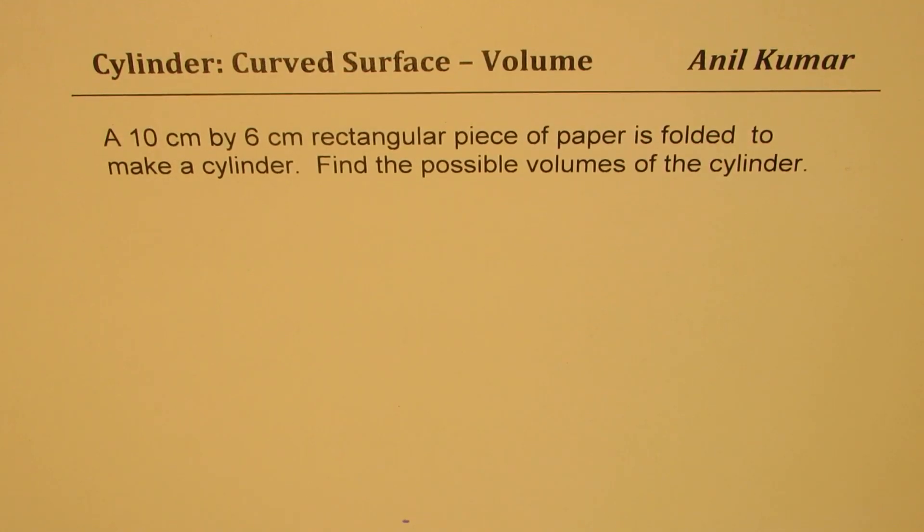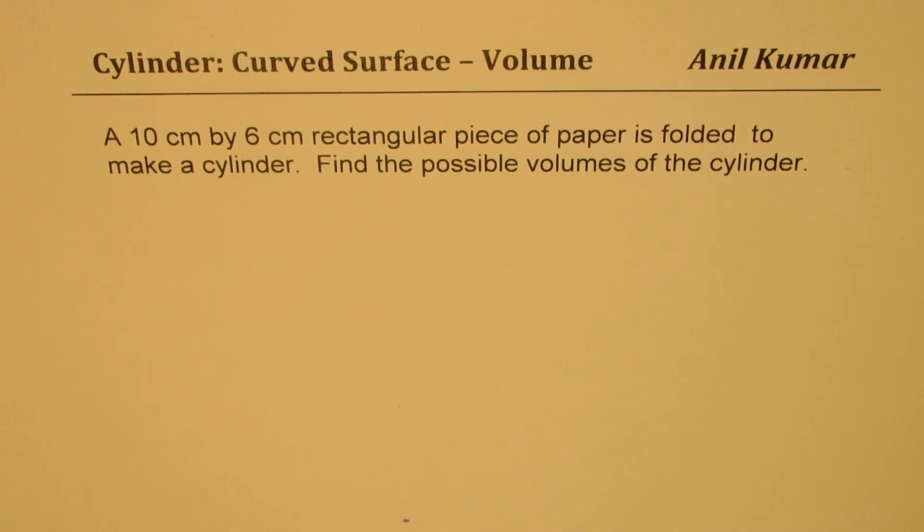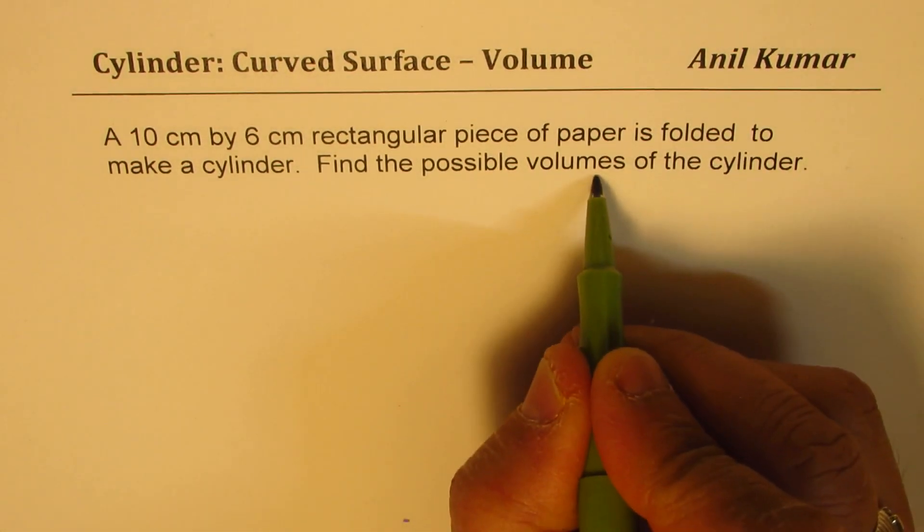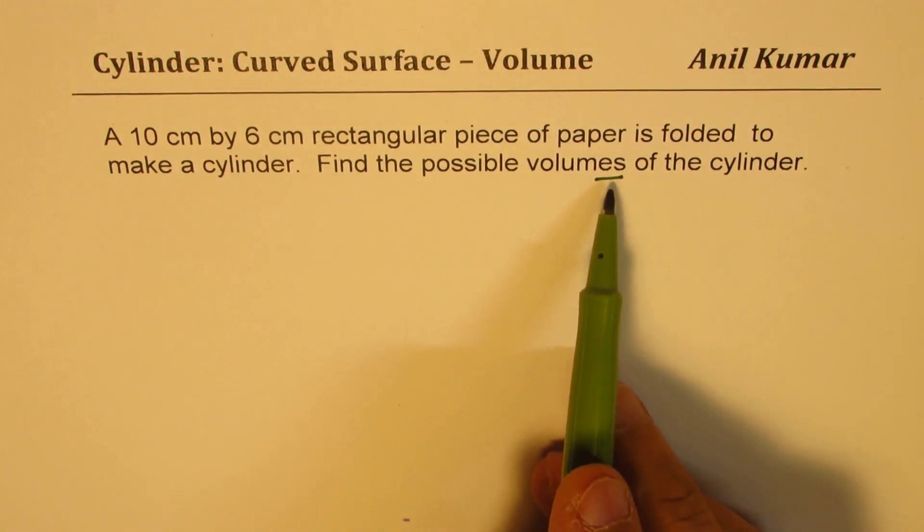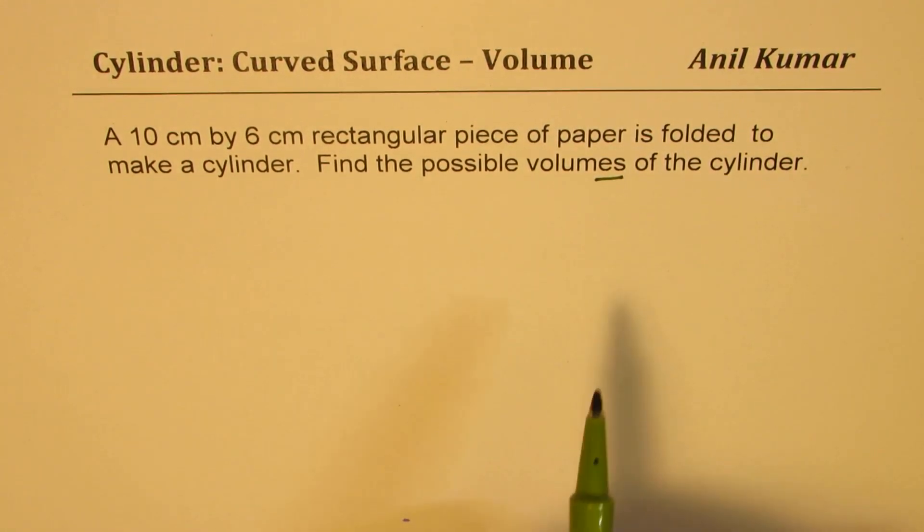I'm Adil Kumar sharing with you an excellent question on surface area and volume of cylinders. The question here is: a 10 centimeter by 6 centimeter rectangular piece of paper is folded to make a cylinder. Find the possible volumes of the cylinder. So that means there could be more than one example.